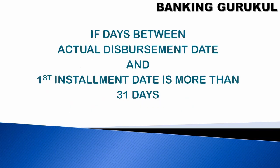If the days between the actual disbursement date and your first installment date are more than 31 days, then BPI is involved — BPI comes into the picture. Otherwise, there won't be any BPI. I'll give you an example on the next screen to explain what BPI is.